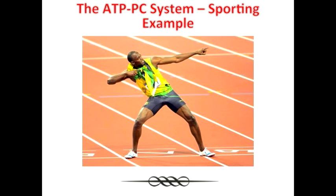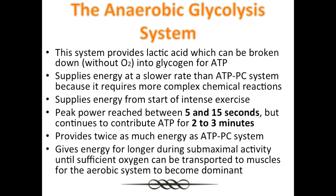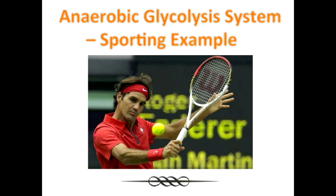The 100m sprint is a great example of the ATP-PC system working dominantly. The second of the anaerobic systems is anaerobic glycolysis. Despite supplying energy at a slower rate than the ATP-PC system, it provides twice as much energy for exercise. Tennis is a sport in which anaerobic glycolysis is at times the dominant energy system.